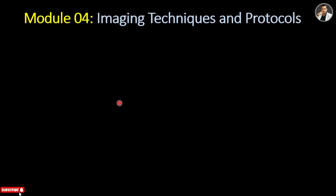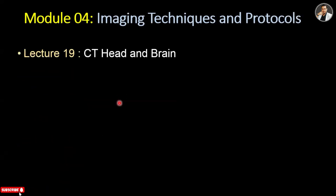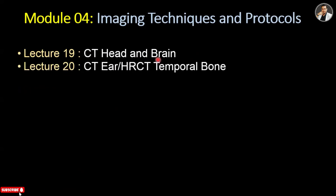Now is Module 4 — imaging technique and protocols. The first lecture here is CT head and brain. In this tutorial, we will learn how to do a CT scan of the head and brain, including the technique, indications, planning, and patient positioning. Next, Lecture 20 covers CT ear and petrous temporal bone — both techniques will be included in this tutorial.